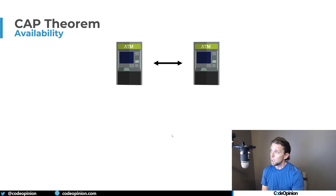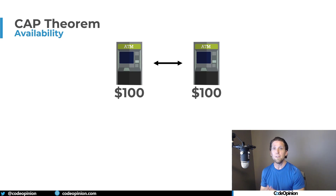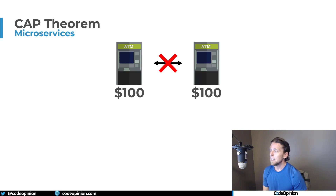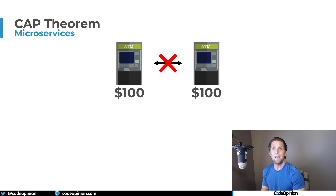Or instead, you can choose availability. If there's a network partition and our user goes to deposit $100, even if the other ATM is unavailable, we tell the user yes, we'll accept your $100. Once that other ATM becomes available, we reconcile to catch it back up to a consistent state. The complexity is that if both ATMs are online but partitioned, a user could deposit $100 to both ATMs and see a balance of $100 when it should be $200, and there are further complexities around reconciliation once they can communicate again.